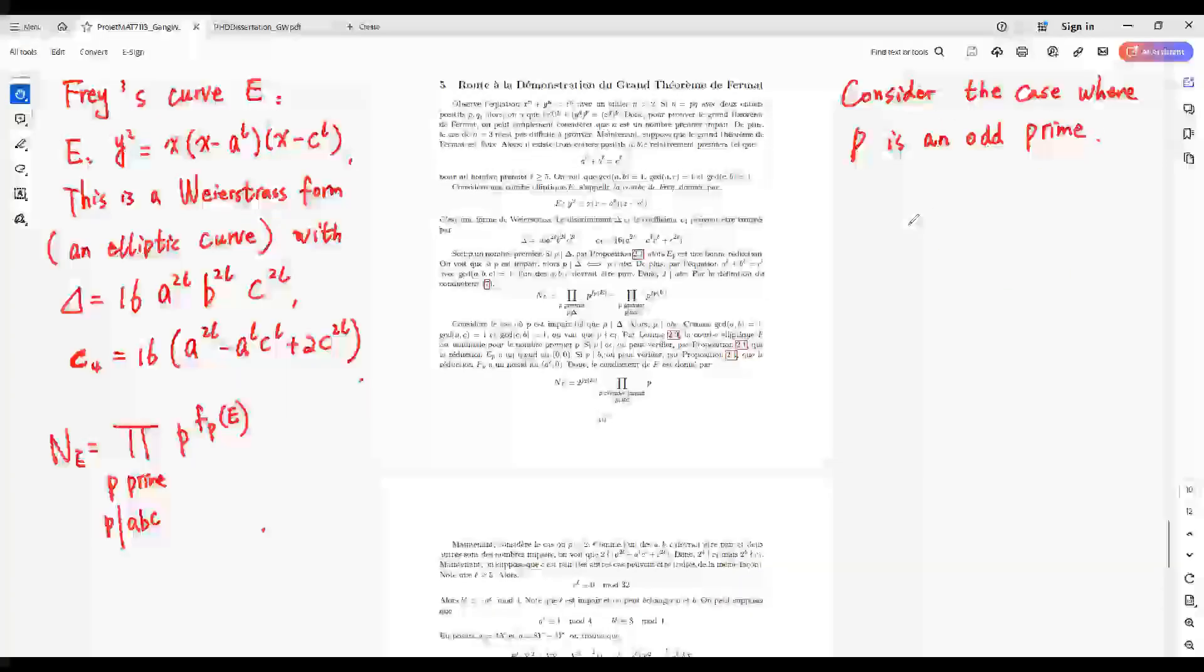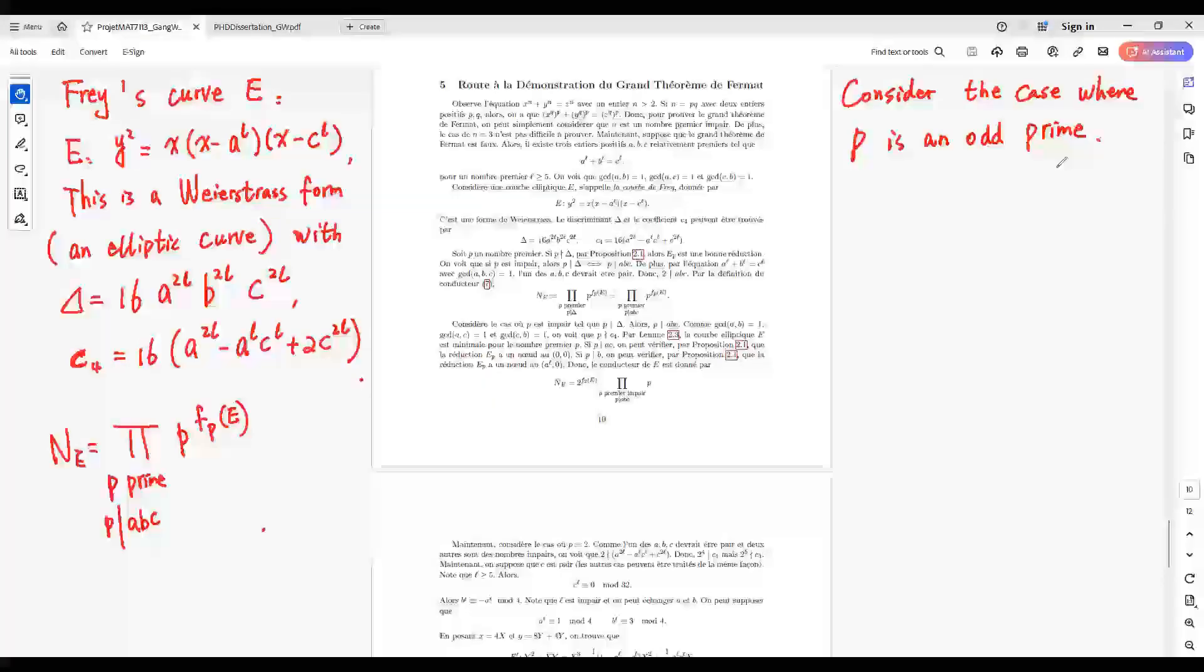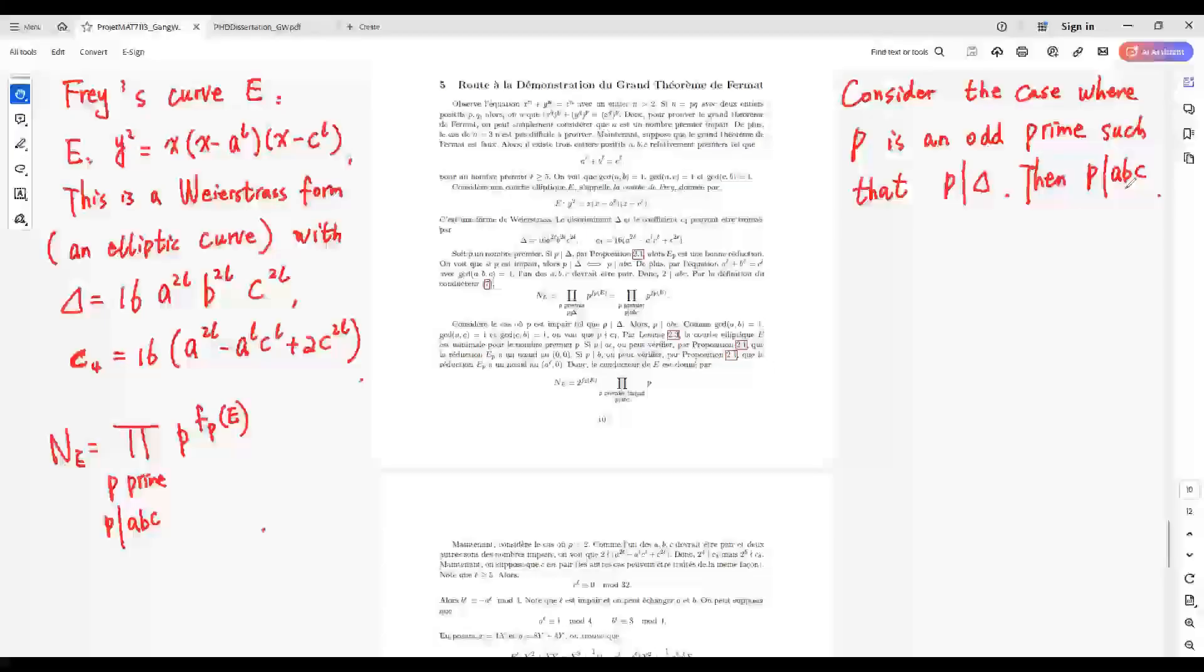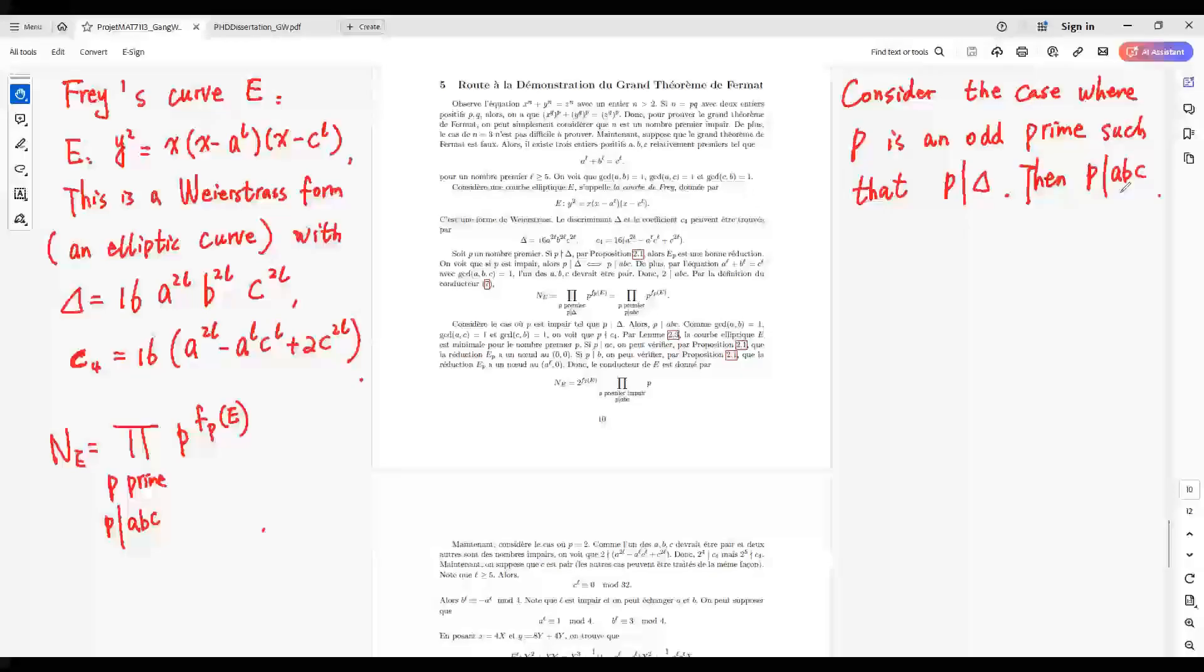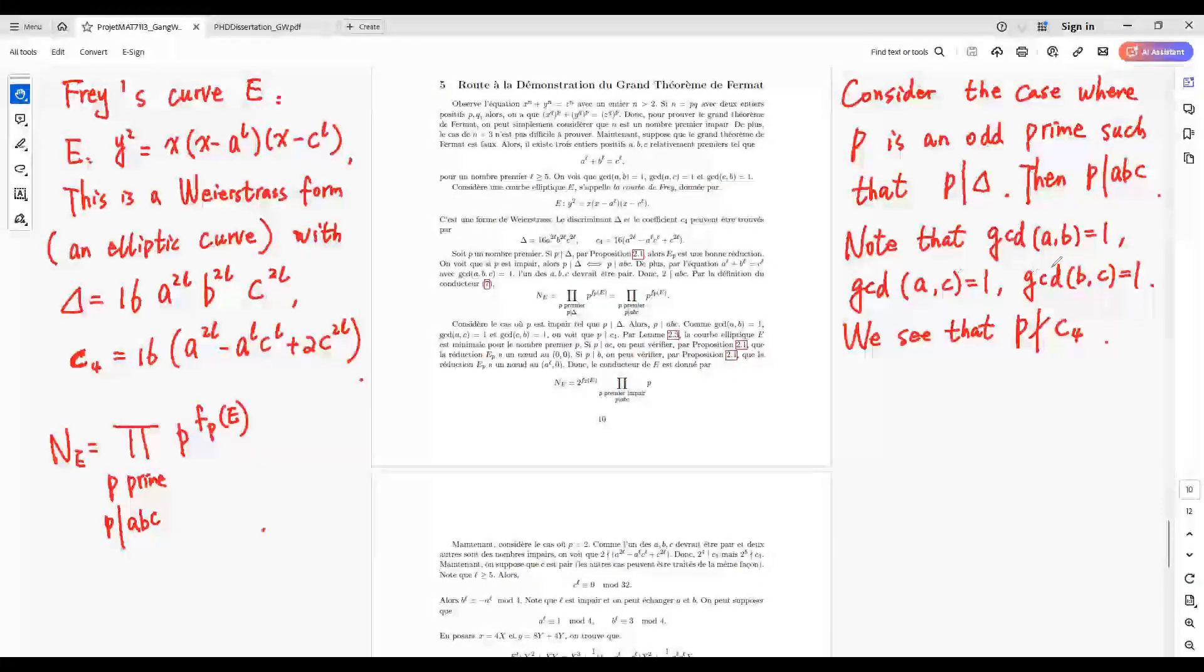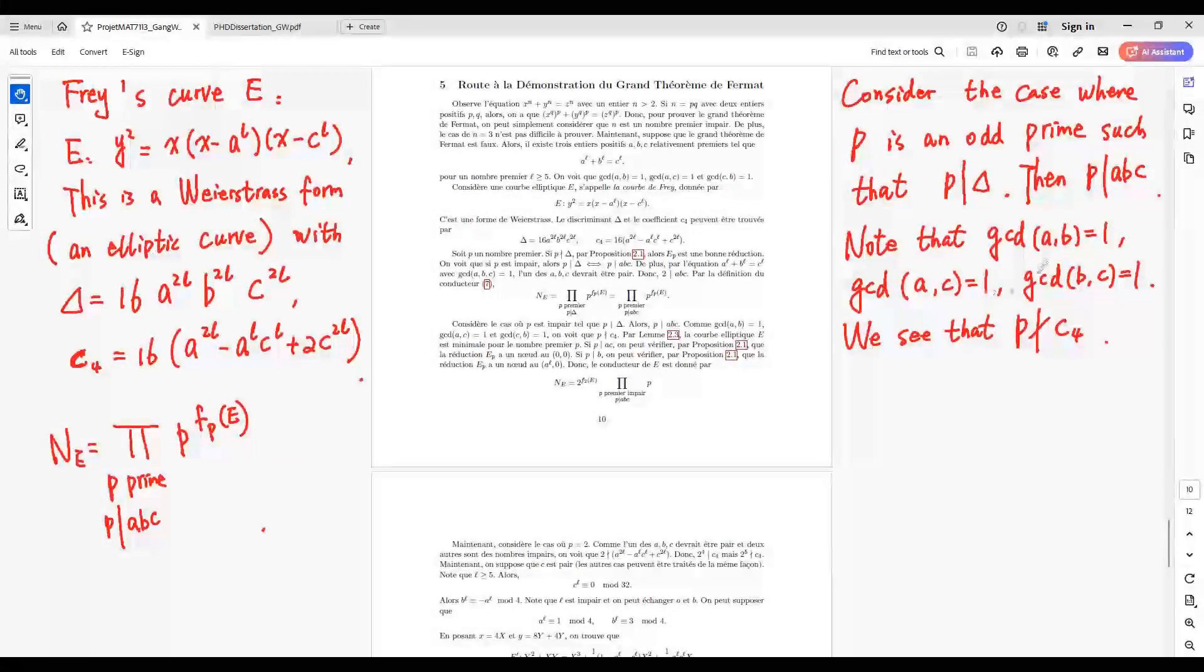Consider the case where P is an odd prime such that delta is divisible by P. Then A times B times C is divisible by P. Note that A, B, C are relatively prime.